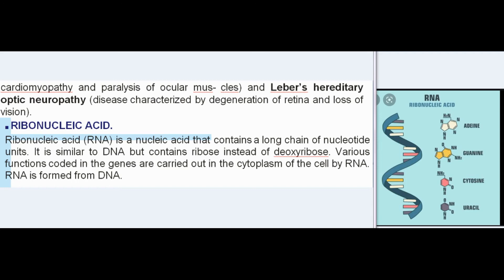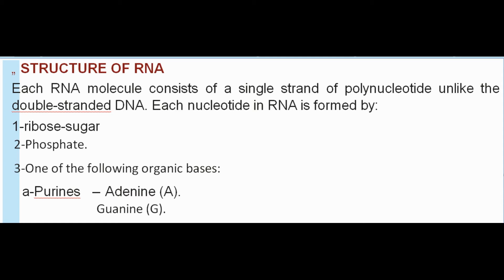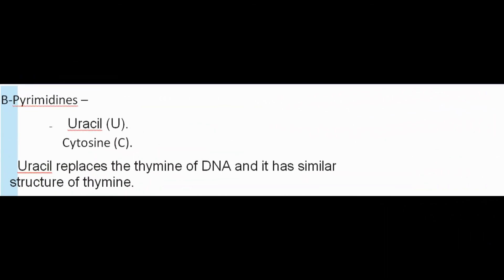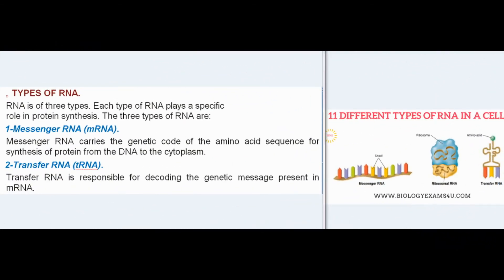Ribonucleic acid (RNA) is a nucleic acid that contains a long chain of nucleotide units, similar to DNA but containing ribose instead of deoxyribose. Various functions coded in the genes are carried out in the cytoplasm by RNA, which is formed from DNA. Each RNA molecule consists of a single strand of polynucleotide. Each nucleotide in RNA is formed by ribose sugar, phosphate, and one of the following organic bases — purines: adenine (A) and guanine (G); and pyrimidines: uracil (U) and cytosine (C). Uracil replaces the thymine of DNA and has a similar structure.